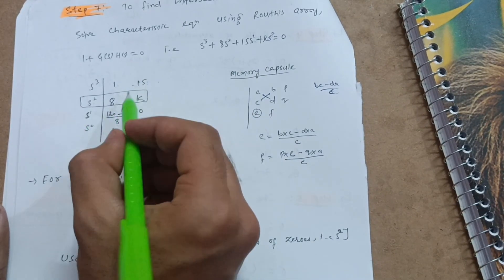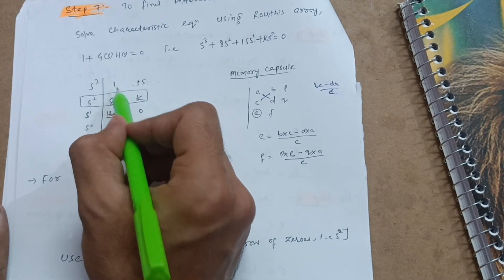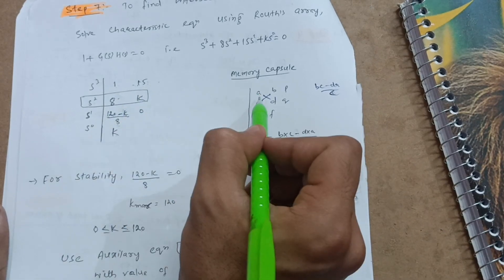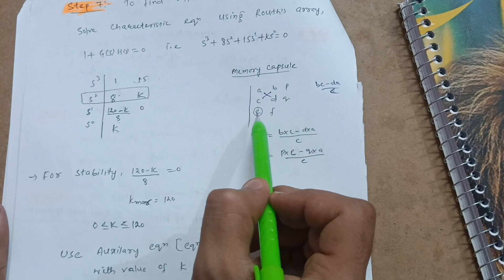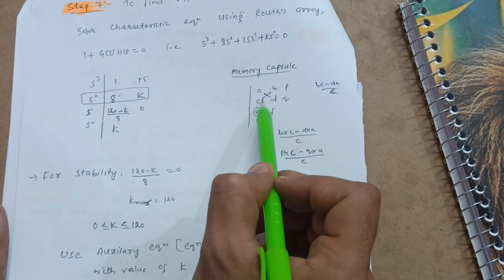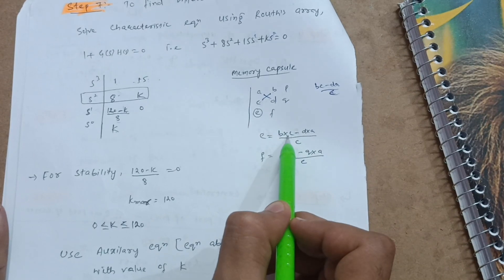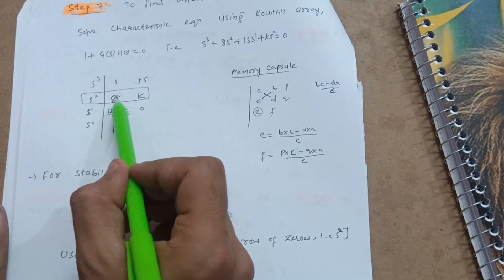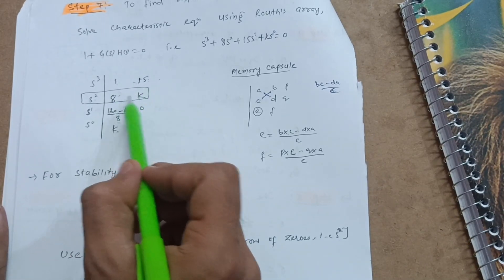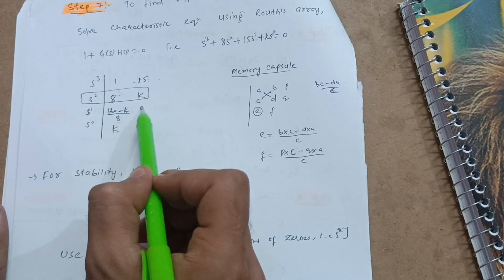To get the s¹ row value, you multiply these two terms. In simple terms: if you have values a, b, c, d and need to calculate e, just compute (b×c − d×a) divided by c. Same here: 8 × 15 = 120, minus k × 1 = k, divided by 8. So the s¹ row value is (120 − k) / 8.